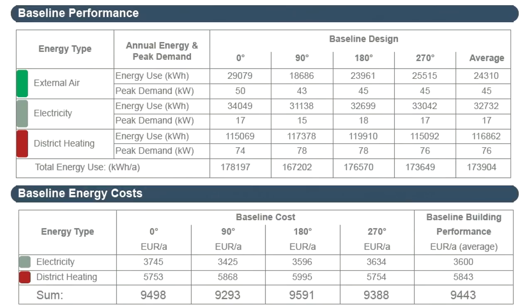The Baseline Performance Chapter's Zero Degrees column displays the original unrotated baseline building's performance data, while the three additional columns contain the performance data of the rotated baseline building versions, and the last column displays the calculated average values. The Baseline Energy Cost Chapter lists the operation costs of each baseline building variation. Note that in this example project, there are two rotated baseline building versions — 90 degrees and 270 degrees — that would cost less to operate than the building with the designed orientation. Unfortunately, site conditions such as adjacent buildings and street positions determined the building orientation, so possibilities for further optimizing thermal block positions and glazed openings are limited.